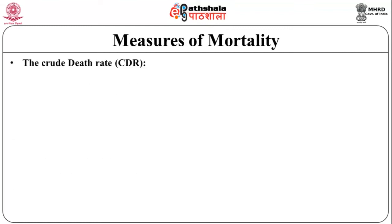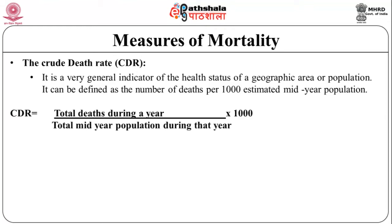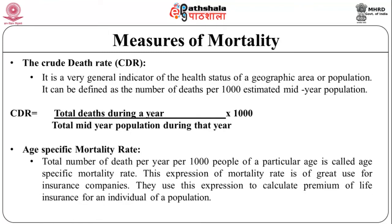Let us discuss each of these in detail. First, we have the crude death rate. It is a very general indicator of the health status of a geographic area or population. It can be defined as the number of deaths per thousand estimated mid-year population. CDR equals total deaths during a year multiplied by 1,000, divided by the total mid-year population during that year.